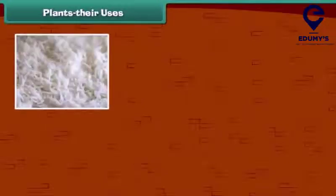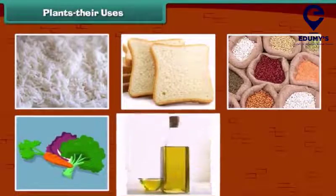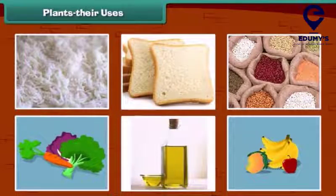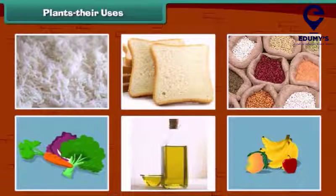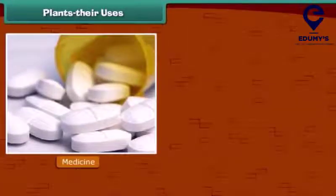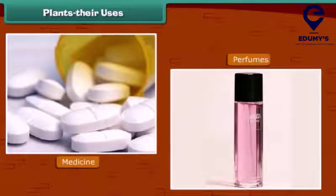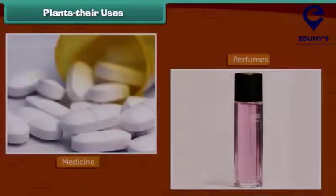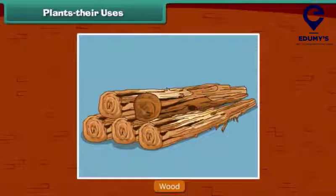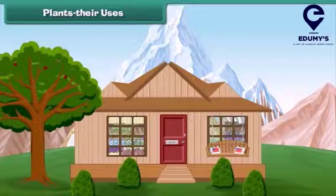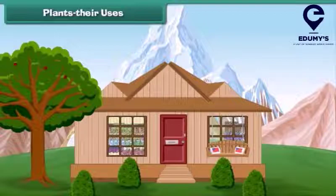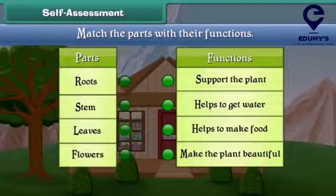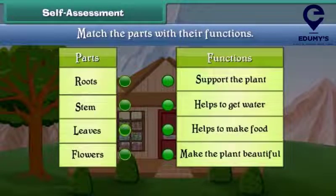Kids, as we know, we get our food items from plants. Besides food, we also get many other things from plants — many medicines and perfumes are made from plants. Plants also give us wood, and in some places houses are made of wood. Friends, now let's check your understanding — match the parts of plants with their functions.